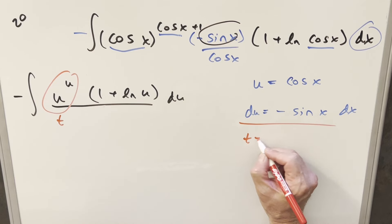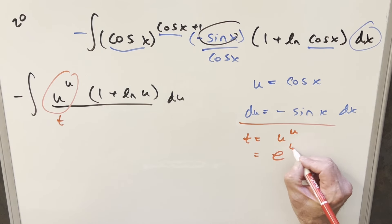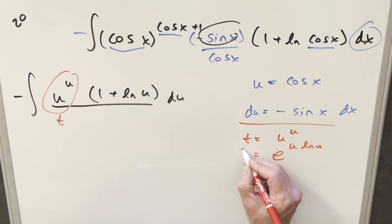And so if we do our substitution t equal to u to the u, what I want is, I don't really want the base to be u and the exponent to be u. I can use the trick to write u as e to the ln u. So we can write this as e to the u ln u as our t value.